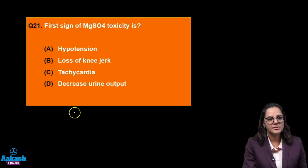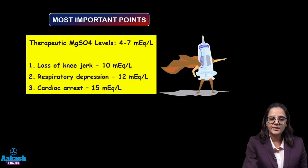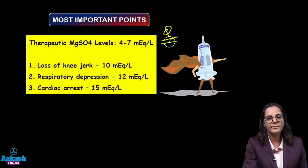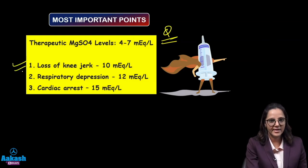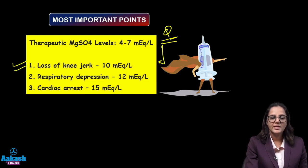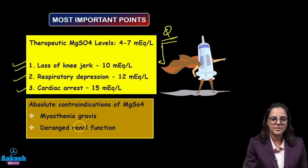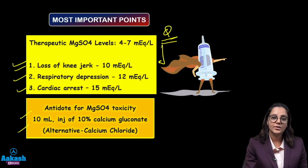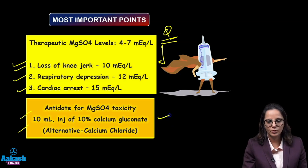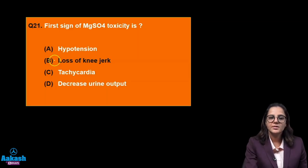What is the first sign of magnesium toxicity? The therapeutic level of magnesium sulphate is 4 to 7 mEq per litre. The first sign of toxicity is loss of the knee jerk or patellar reflex when levels reach 10 mEq per litre. Respiratory depression follows, then cardiac arrest. Contraindications: myasthenia gravis and deranged renal function. The antidote for magnesium toxicity is 10 mg injection of 10% calcium gluconate or calcium chloride. So the first sign of magnesium toxicity is loss of knee jerk.